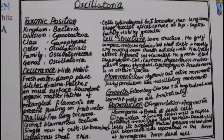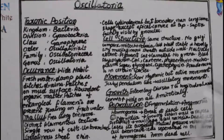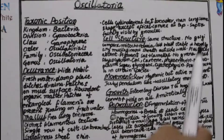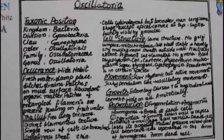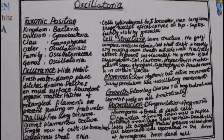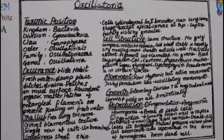Regarding nucleoplasm, Oscillatoria does not have a true nucleus or nucleolus. The genetic material is present in the cell as a central body — the same characteristic shared by all cyanobacteria, including Nostoc.